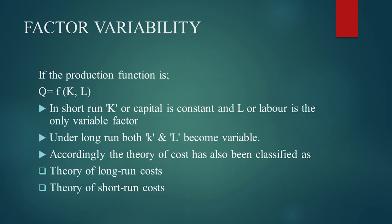Under the long run, both K and L become variable — capital and labor both become variable. So the theory of cost has also been classified as theory of long run cost and theory of short run cost. In the short run, no additional capital is going to be introduced, which means the same amount of capital applies. Labor is the only factor which is variable.